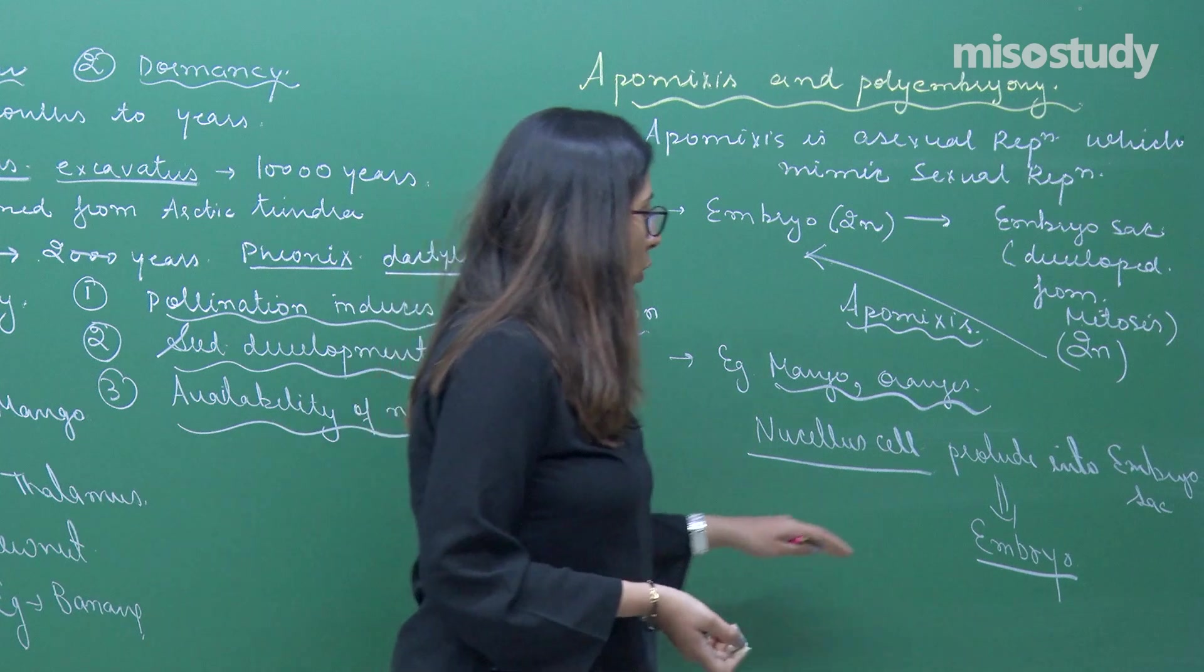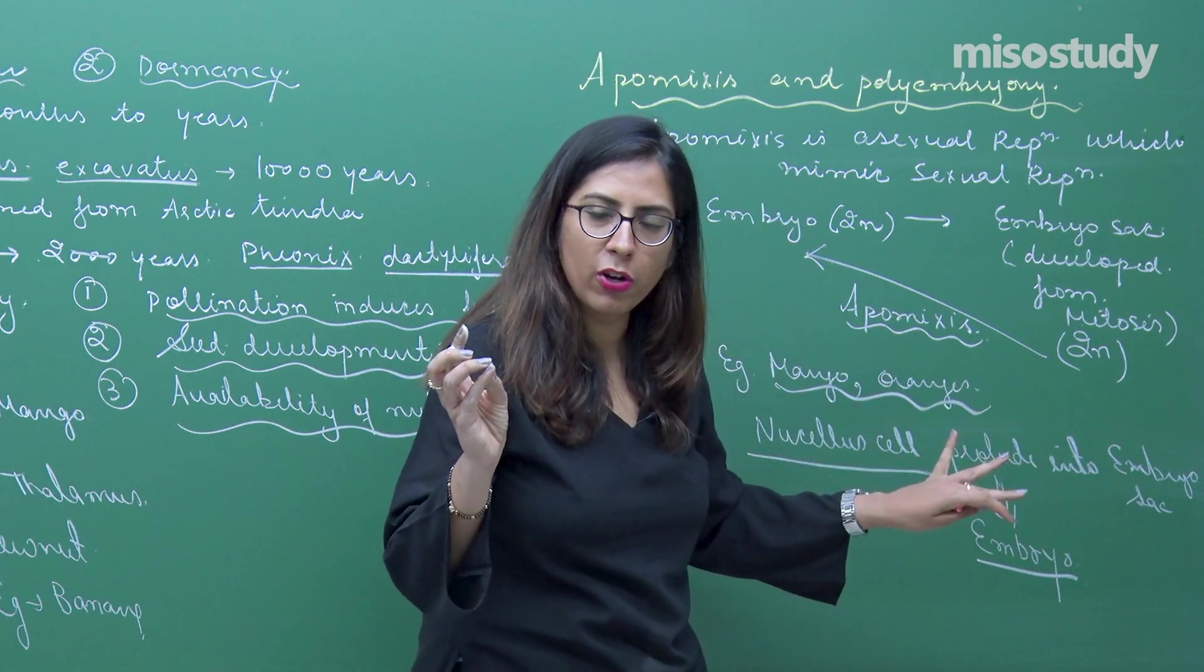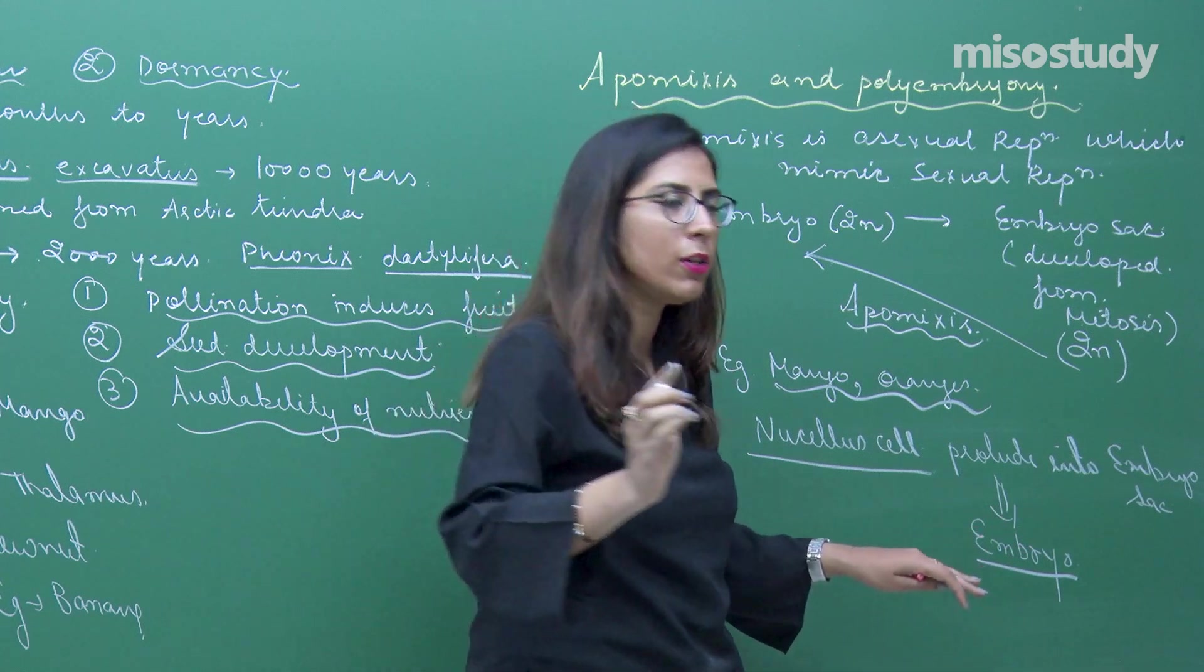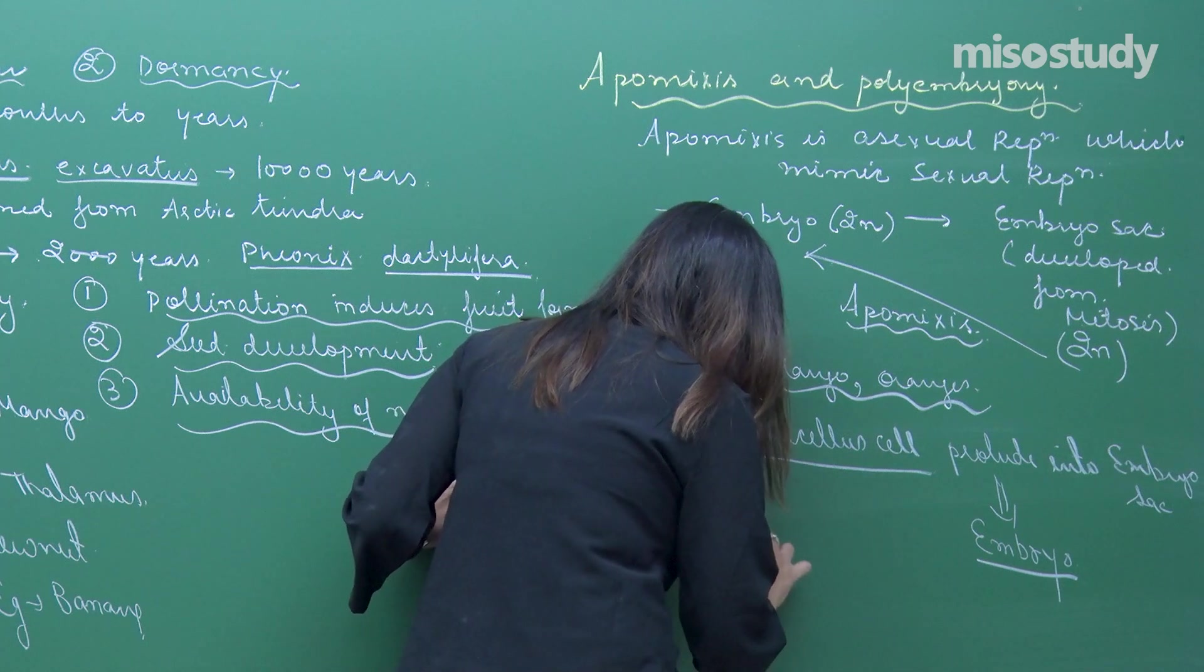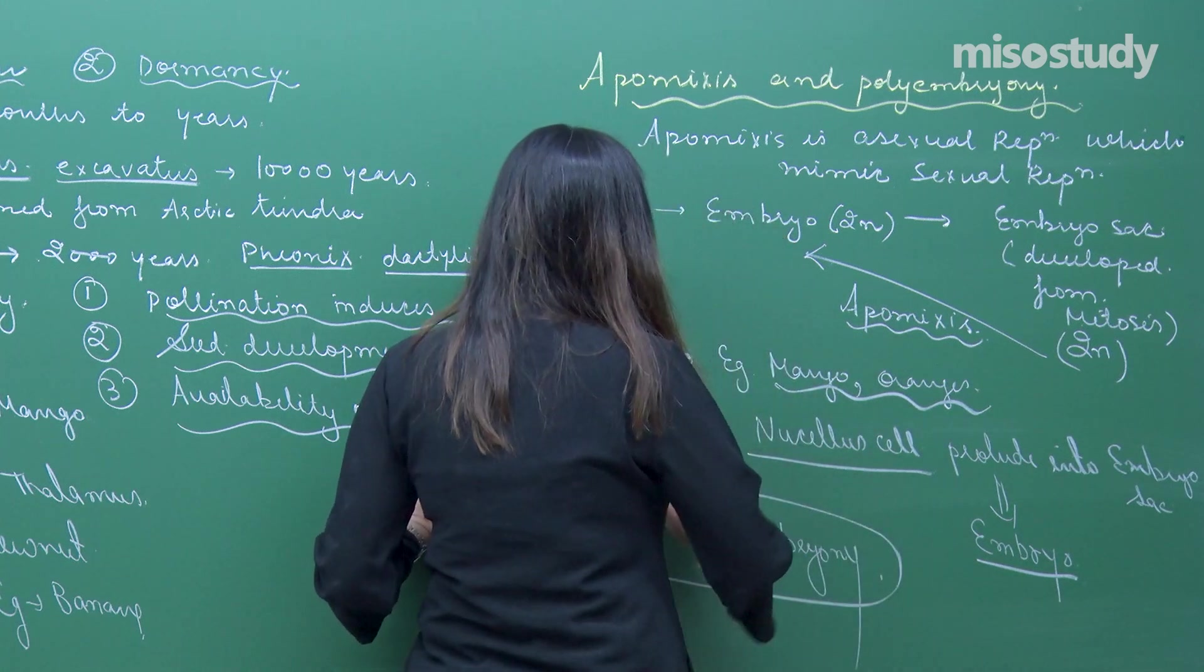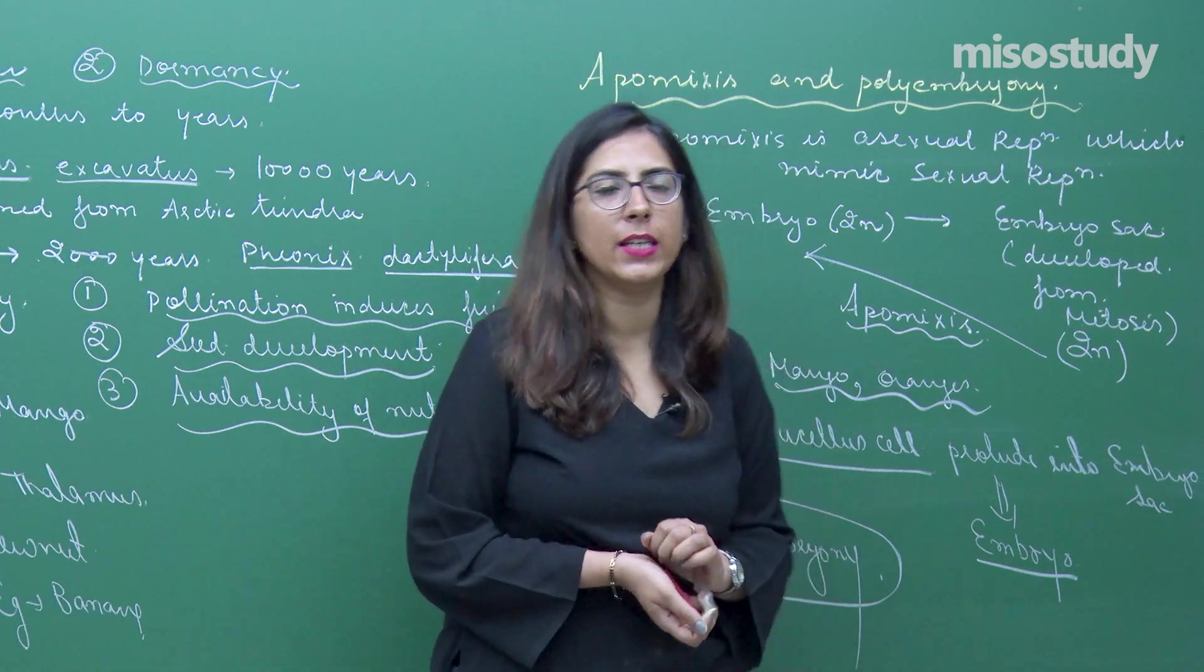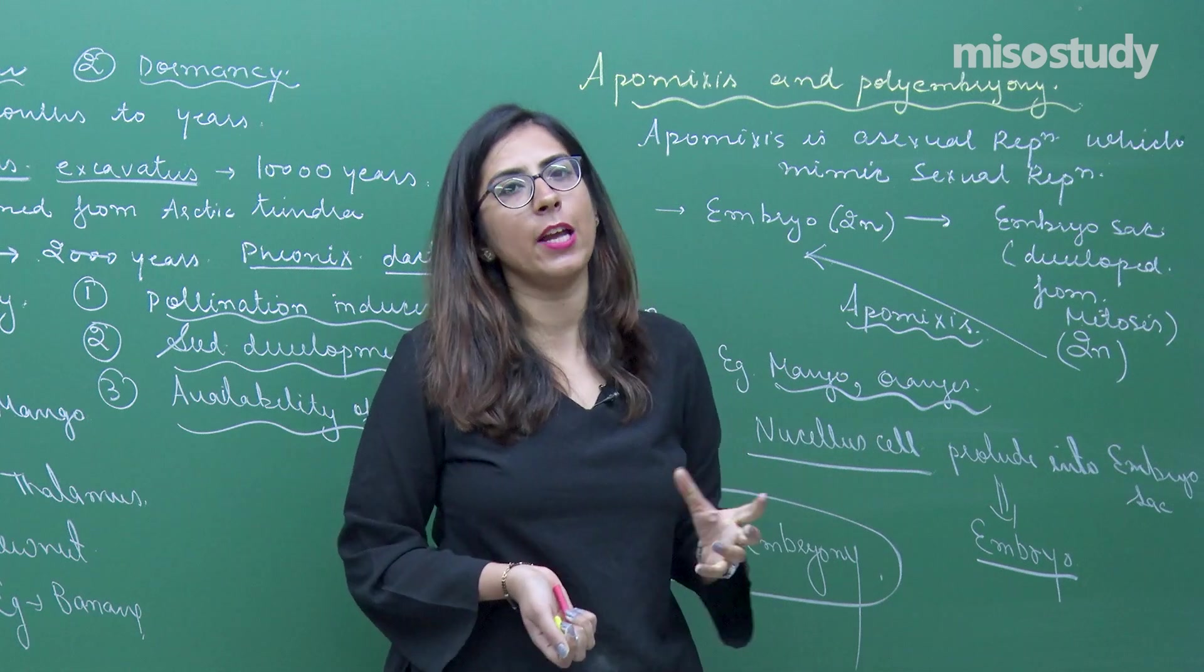In this case, such type of condition in which the nucellus cells are contributing, the integumentary cells are contributing, there is formation of a zygote also - it will lead to the process of polyembryony. That means many embryos are present in a structure. Large number of these embryos will be present.